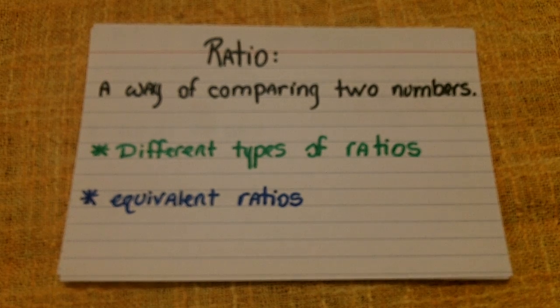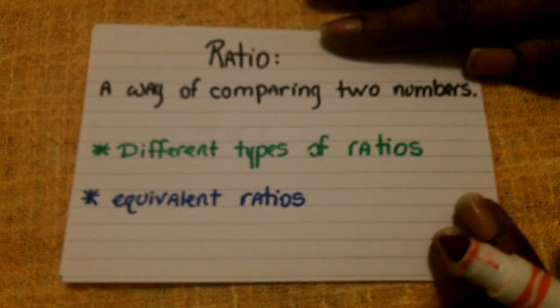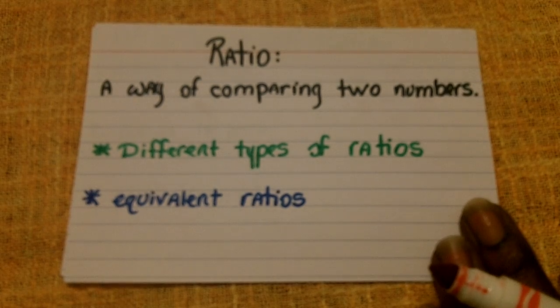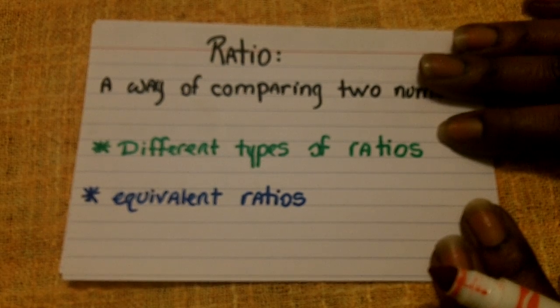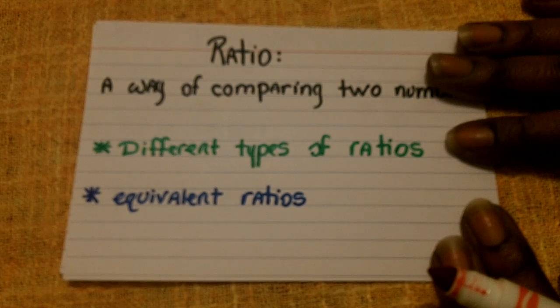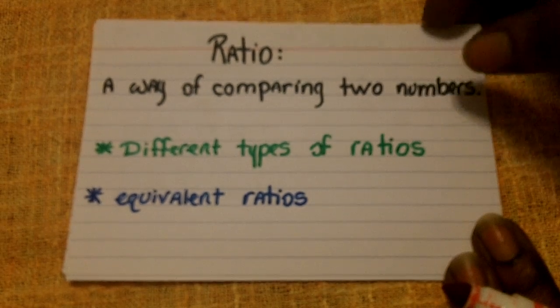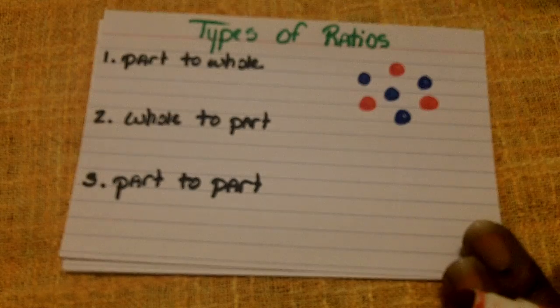Hello, today we are going to talk about ratios. A ratio is a way of comparing two numbers. We're going to talk about the different types of ratios as well as the different ways of writing them. We're also going to discuss equivalent ratios. So let's go ahead and get started.